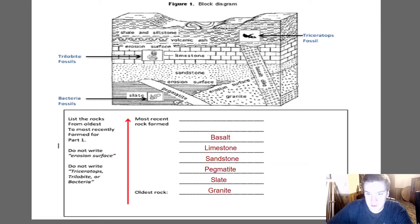Then we would look at the basalt, this basaltic dike. That's another igneous intrusion that cuts through the granite. It cuts through the sandstone. It cuts through the limestone.